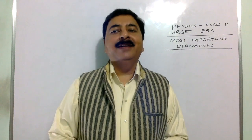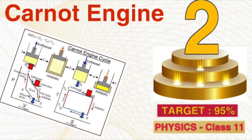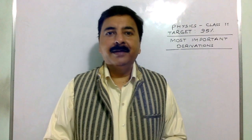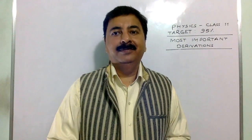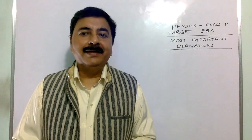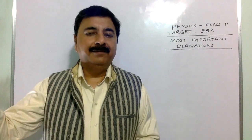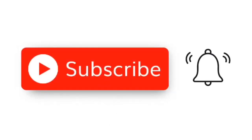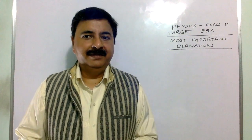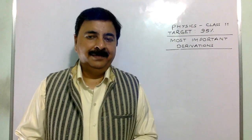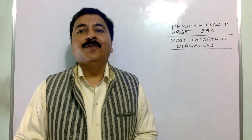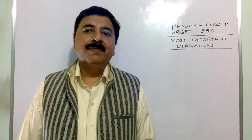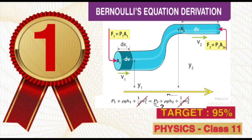Derivation number 2 is the Carnot engine, from thermodynamics. It's a very important and challenging derivation. You must know how to draw the graph of the Carnot engine and what are the limitations of the Carnot engine — it is the most efficient engine. And now the number one: it is one and only, a sure derivation that will definitely come — it's Bernoulli's theorem, from fluid in motion. It is based on the law of conservation of energy.